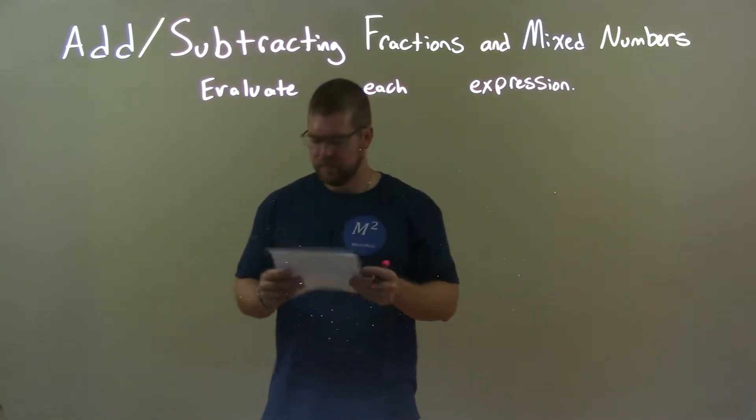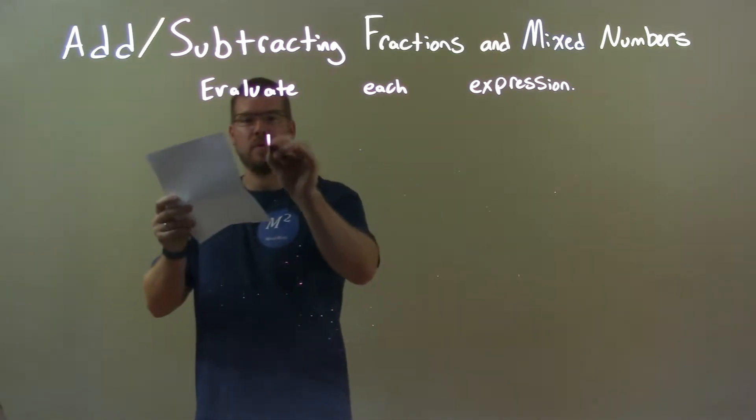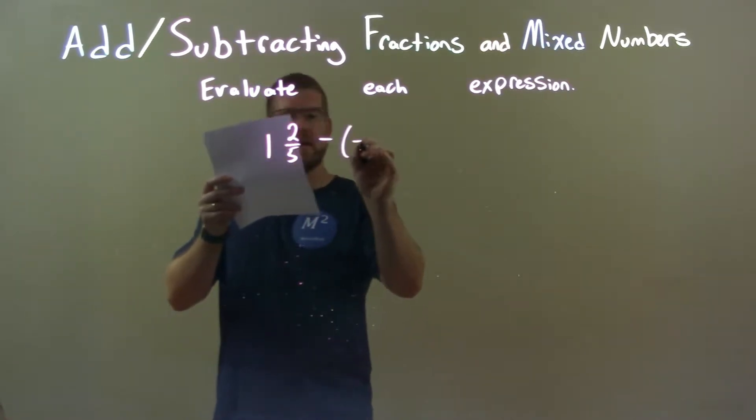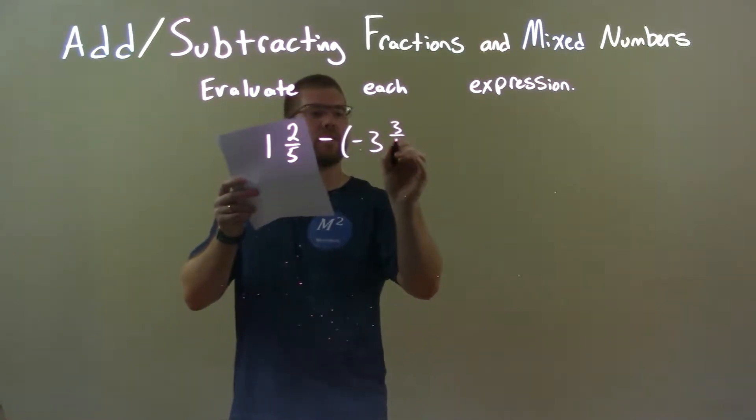So, if I was given these numbers, 1 and 2 fifths minus a negative 3 and 3 fourths.